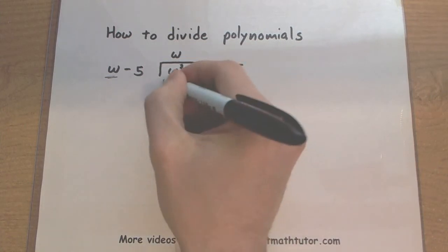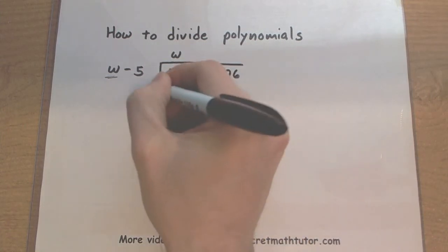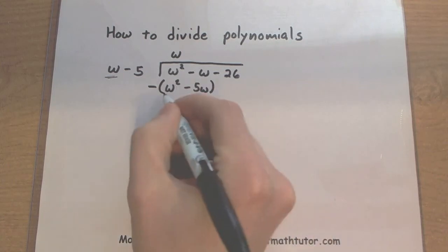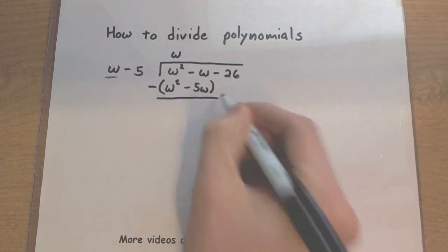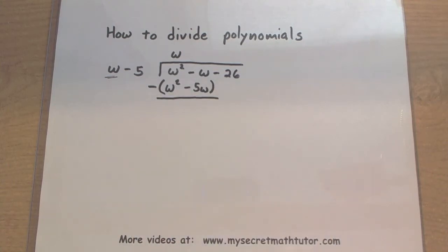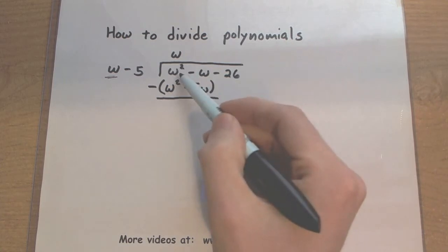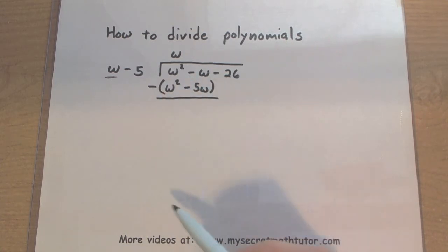Now, one thing that helps me is I'll put this in parentheses. I'll put a giant old negative sign out front. That'll help me remember that I'm subtracting away the entire thing. Now, let's see how this affects things. So w squared minus w squared, that's gone.